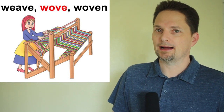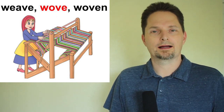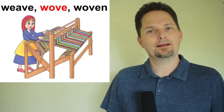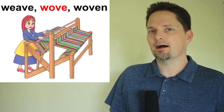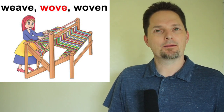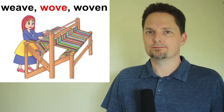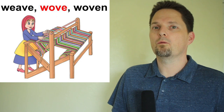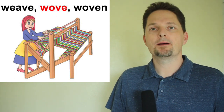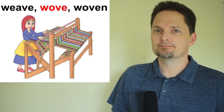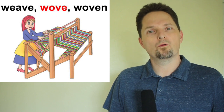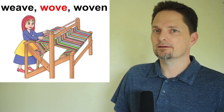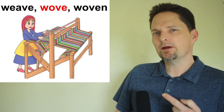And we have some verbs in the past making the O sound. Weave — in the present: weave. She's weaving a rug. In the past: she wove. She wove a rug. And the participle is woven. She has woven many rugs. So the past is wove — she wove a rug. Did she weave a rug?